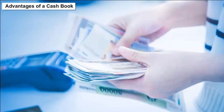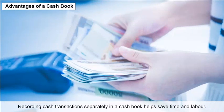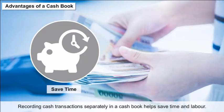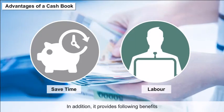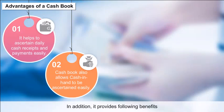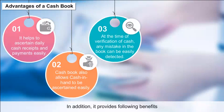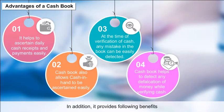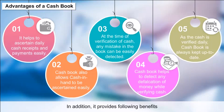Advantages of a Cash Book: Recording cash transactions separately in a cash book helps save time and labor. It helps to ascertain daily cash receipts and payments easily. It allows cash in hand to be ascertained easily. At the time of verification, any mistake in the book can be easily detected. It helps detect any defalcation of money while verifying cash. As cash is verified daily, the cash book is always kept up to date.